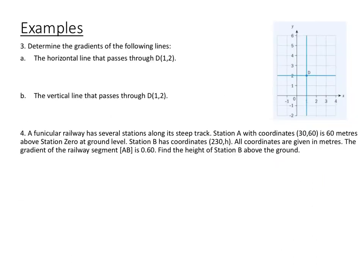We have this point D here, which is at 1 comma 2, and we want to find the slope of the horizontal line that passes through the point 1, 2, and the vertical line that passes through the point 1, 2. Go ahead and pause the video and do number 3.